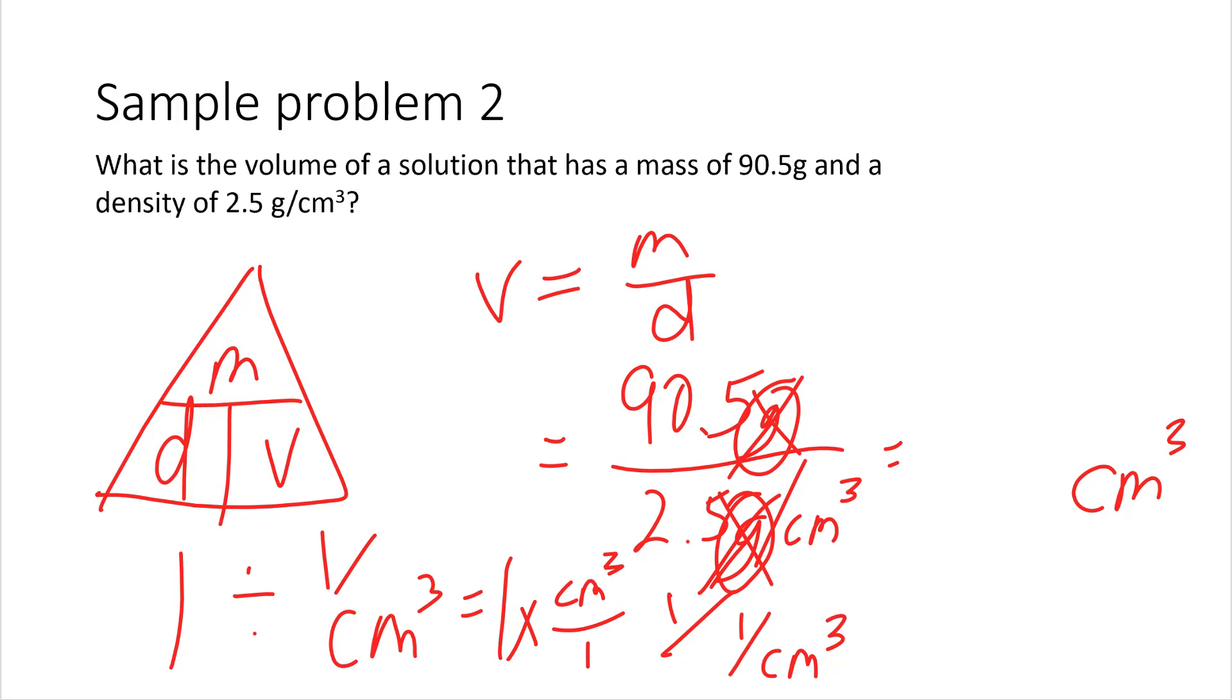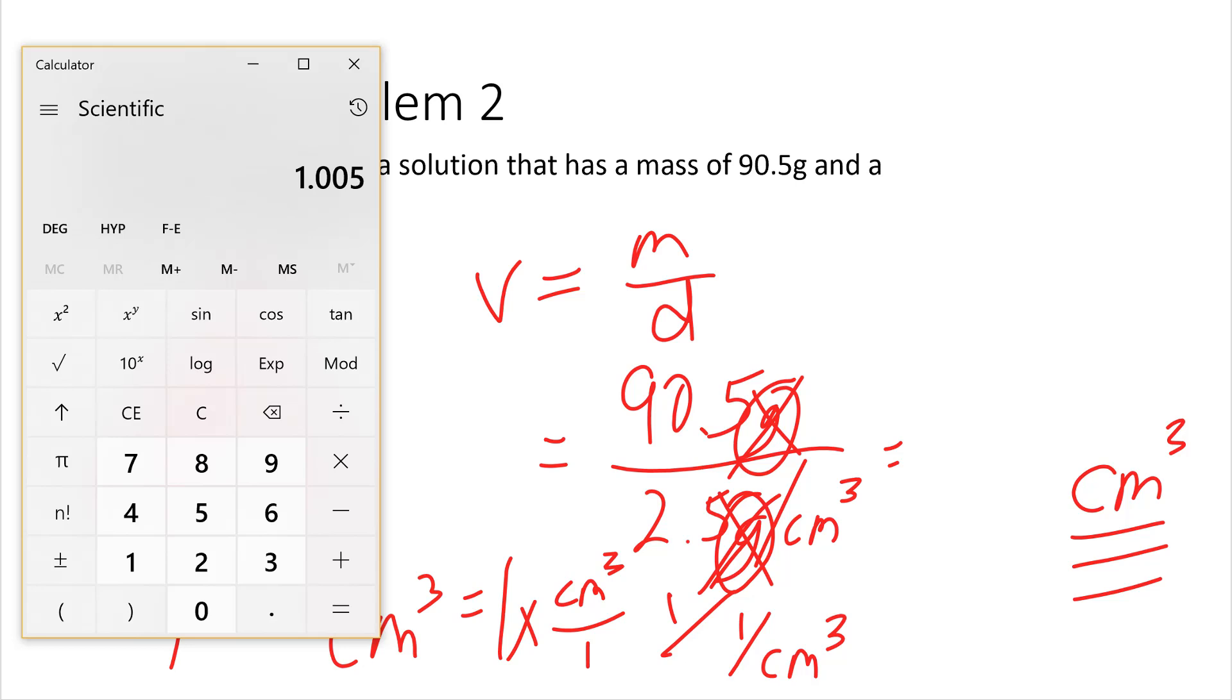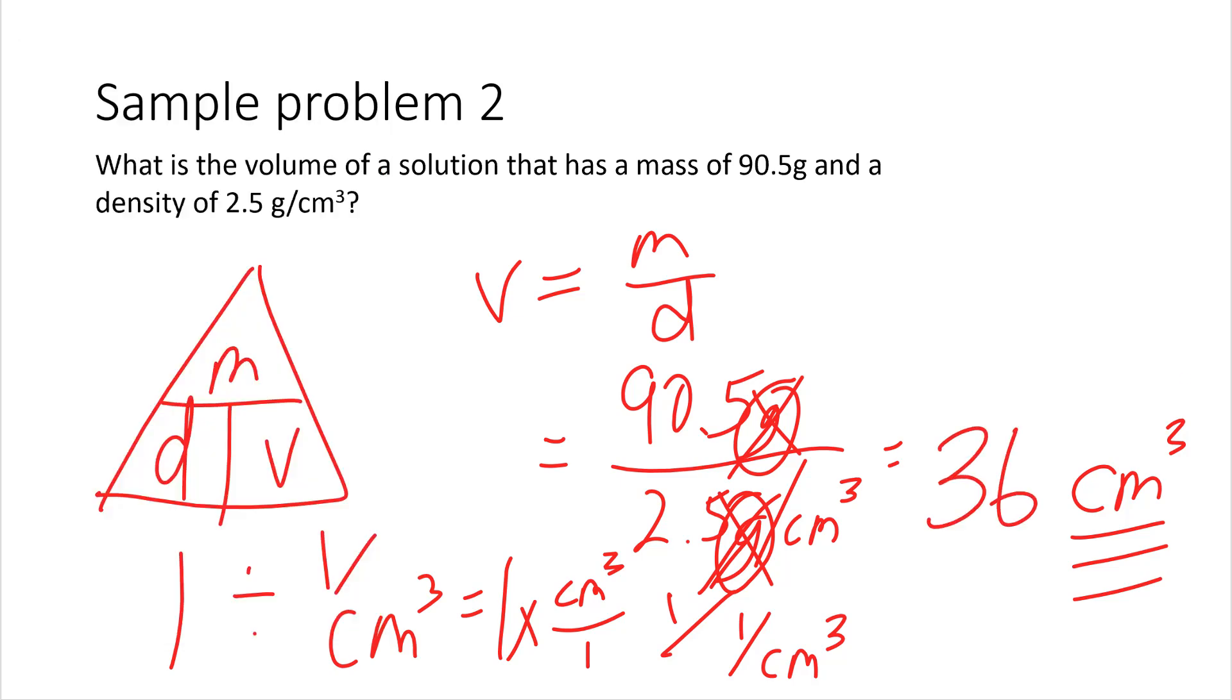Again, if you don't understand that, don't worry about it. Ask your math teacher or ask me, and I'll explain a little bit more in detail. But, the idea here is that your units are centimeter cubed, because you're solving for volume. And, remember, centimeter cubed is the same as milliliters. So, you do 90.5 divided by 2.5. Get clear here. Okay. So, the volume is 36.2 milliliters. You notice that one of your numbers in the given here, in the givens, is only two digits.